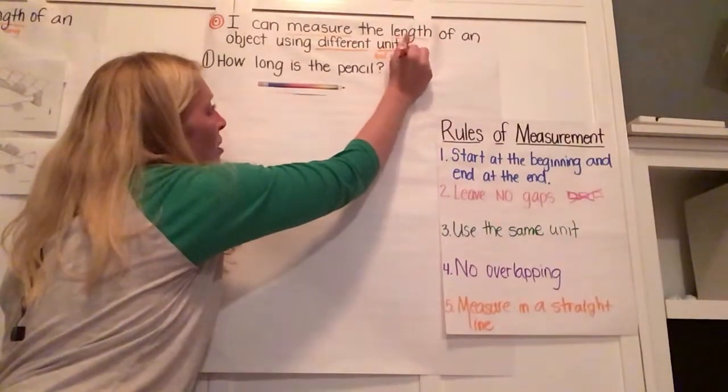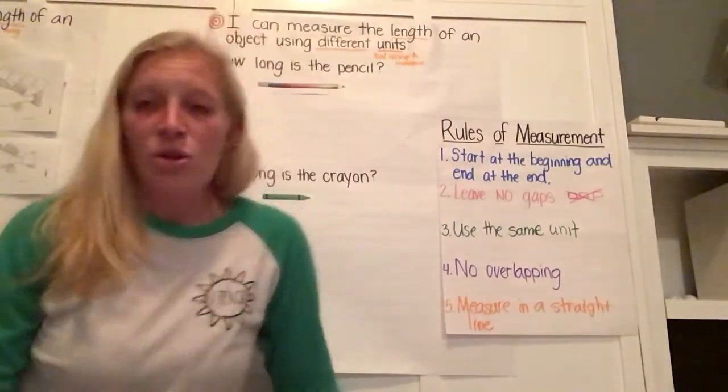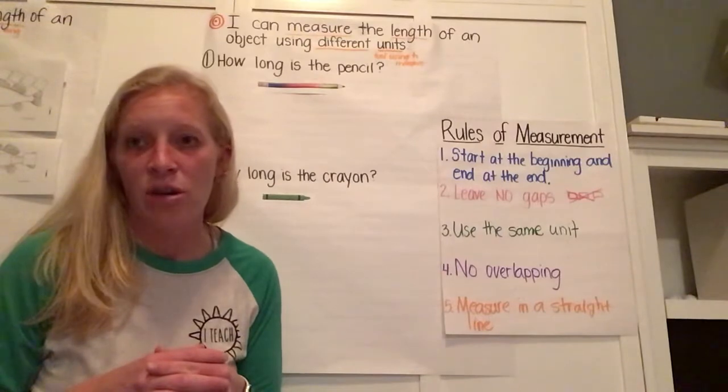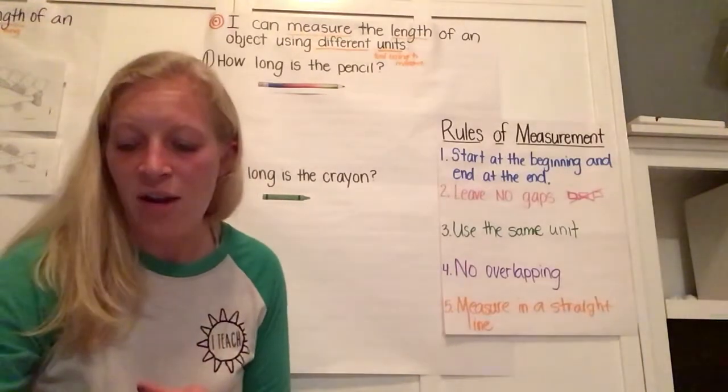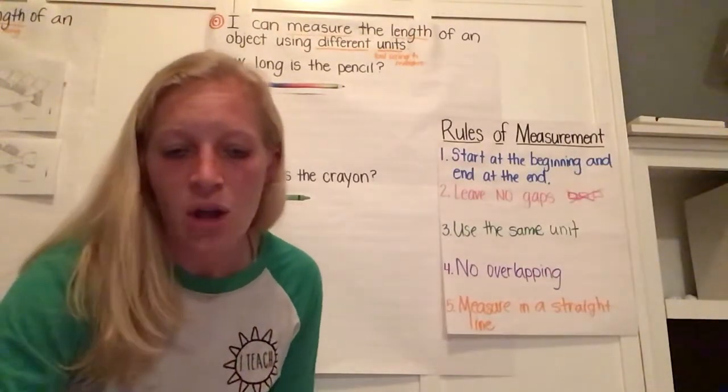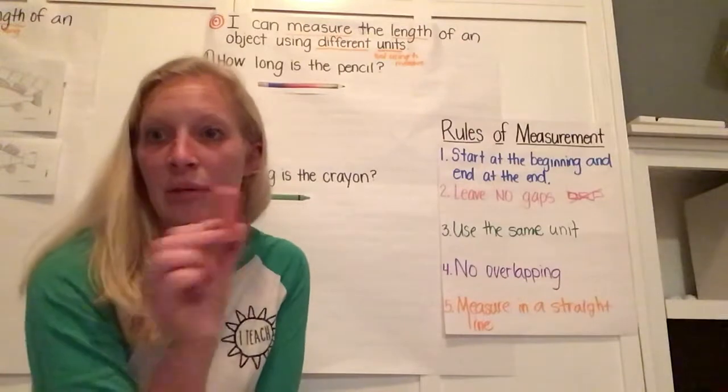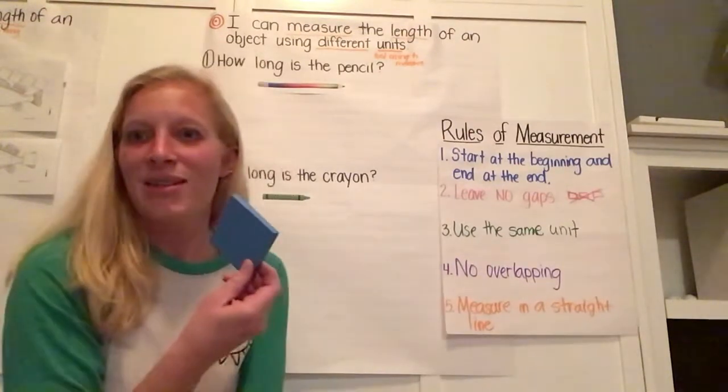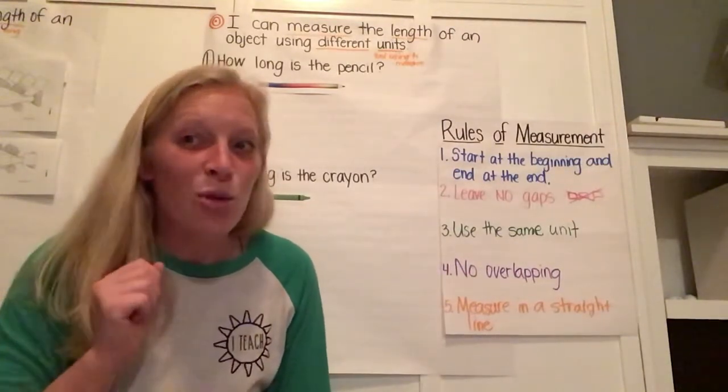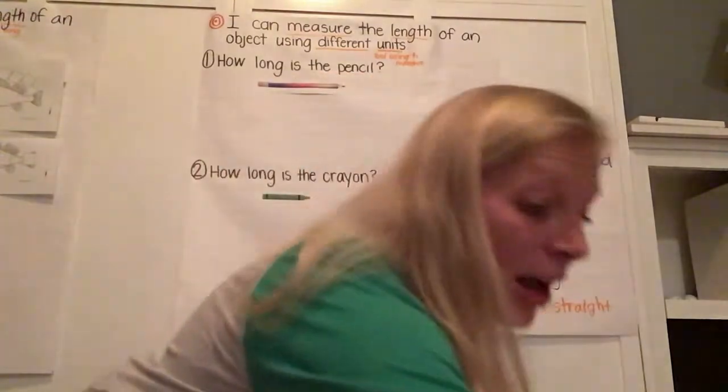We might be using tiles. We might be using other things you have around your house. Whether you're using a kit that you got from your teacher or you have things around your house that you want to use to measure. Maybe they're toothpicks. Maybe they are paperclips. Maybe you have little cubes around your house, or big cubes, or maybe you're using erasers to help you measure, or post-its, or Q-tips. You can use different things to help you measure.